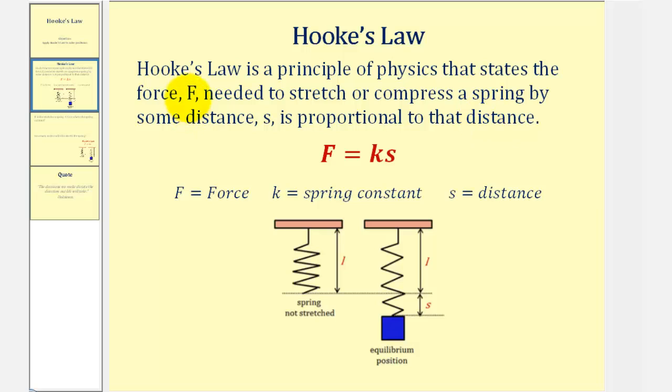And since F is proportional to s, we can use the direct variation equation F equals k times s to represent this relationship, where F is the force, k is the spring constant, and s is the distance the spring is stretched.